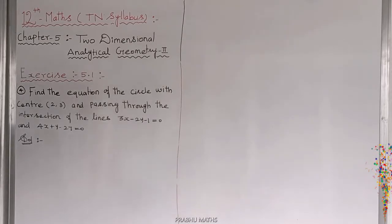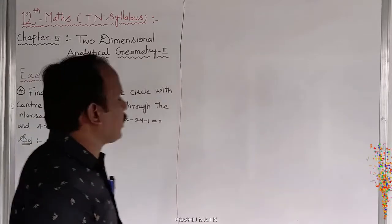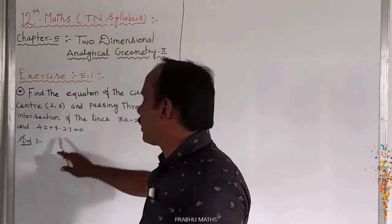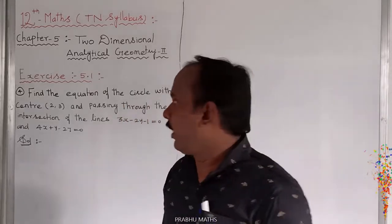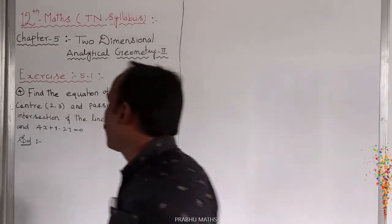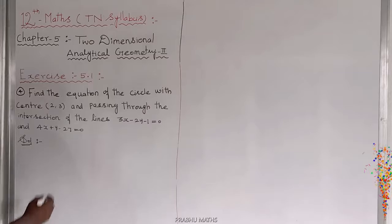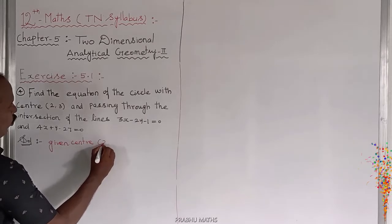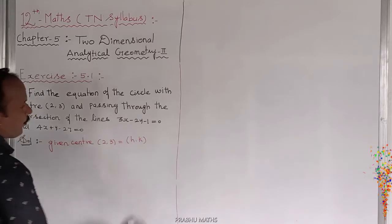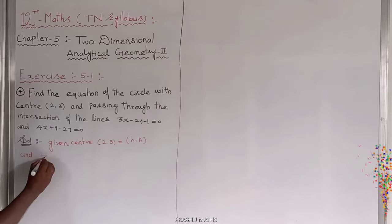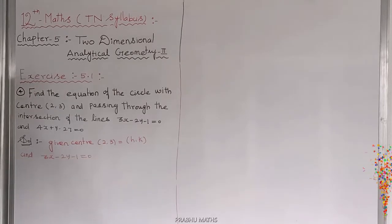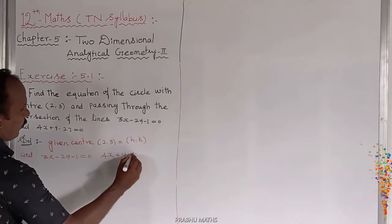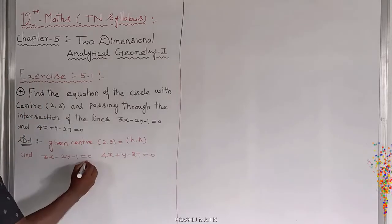Find the equation of the circle with center (2,3). The circle passes through the intersection of two lines. Given: center (2,3), that is equal to H,K. The first line equation is 3X minus 2Y minus 1 equals 0. The second line equation is 4X plus Y minus 27 equals 0.